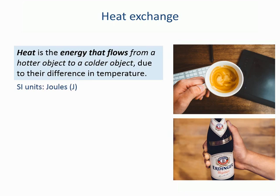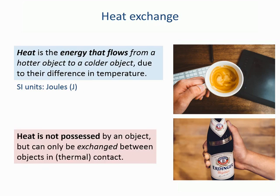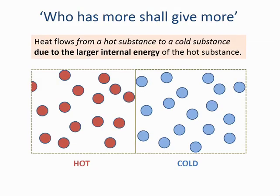However, as opposed to the mechanical potential energy or kinetic energy, we cannot say that heat is possessed by an object, but it only can be exchanged between objects that are in thermal contact. The object that has more internal energy will give some of its internal energy to the object that has less, and that is the reason why there is a flow of heat. Heat flows from a hot substance to a cold substance, due to the larger internal energy of the hot substance.